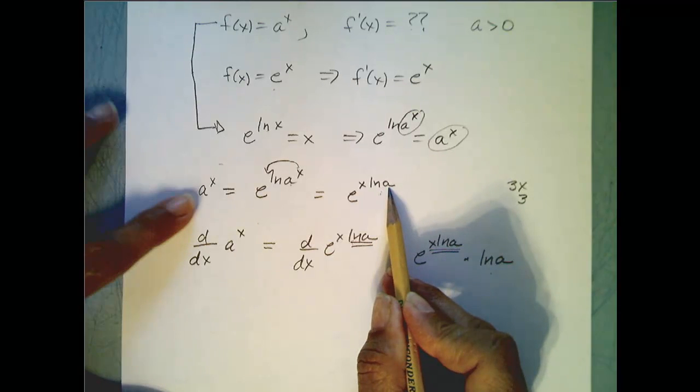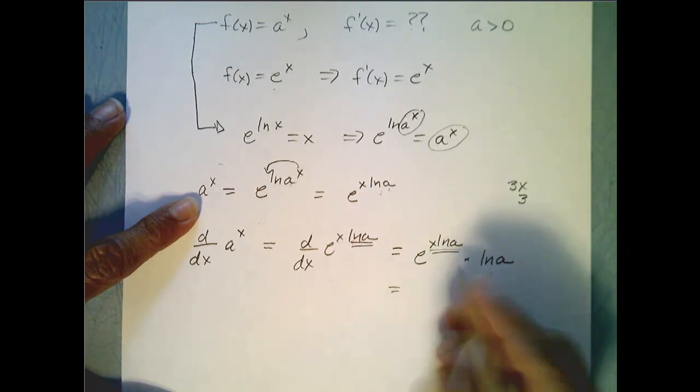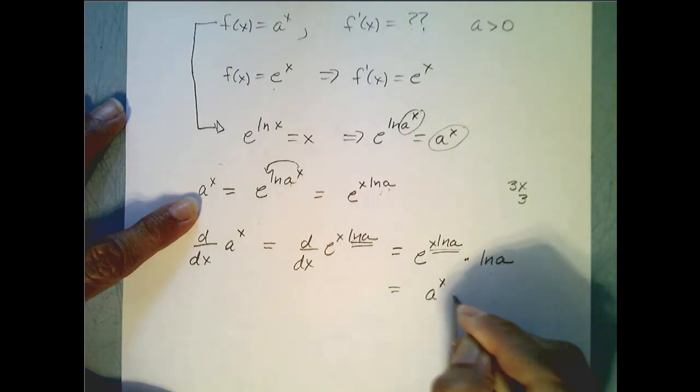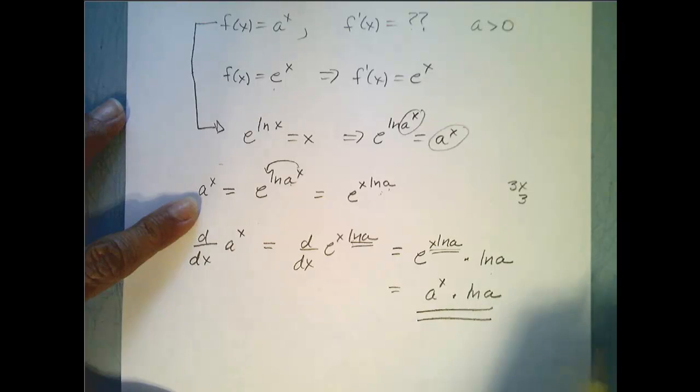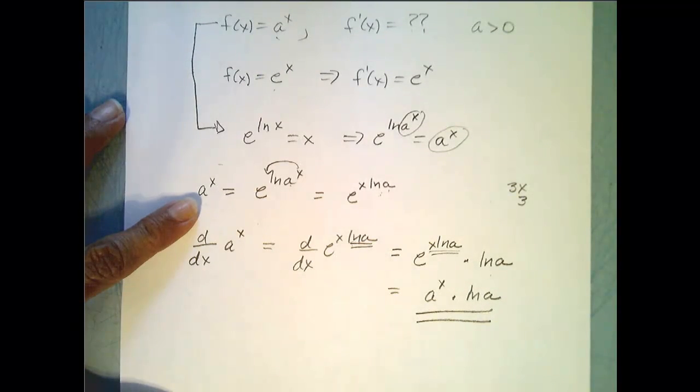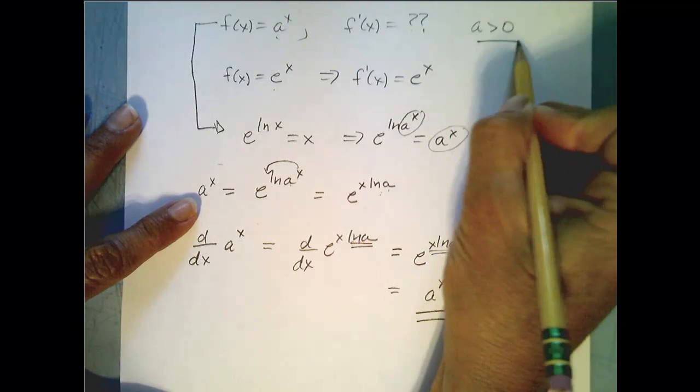Remember what e to the x ln of a is? It is actually a to the x. So, the final answer is a to the x times the natural log of a. That is, the derivative of a to the x for a greater than 0.